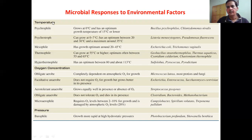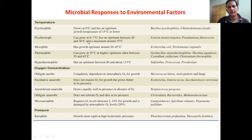Based on temperature, microorganisms are classified as: psychrophiles (grow optimally at 0°C, range 0–15°C); psychrotrophs (range 0–7°C, optimum 20–30°C); mesophiles (20–45°C); thermophiles (above 50°C, optimum 55–65°C); and hyperthermophiles (80–100°C). These organisms clearly thrive at very high temperatures.